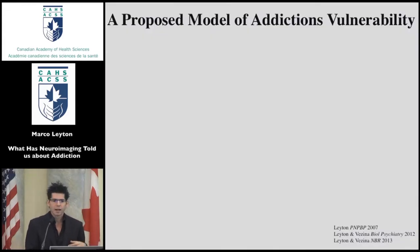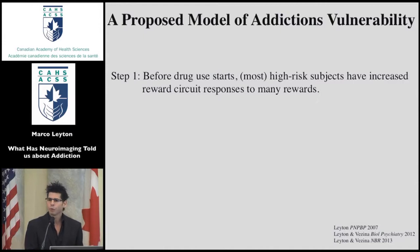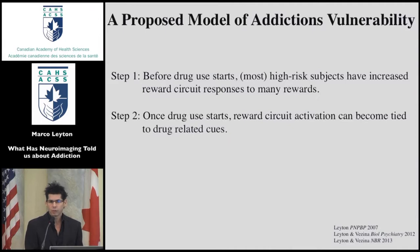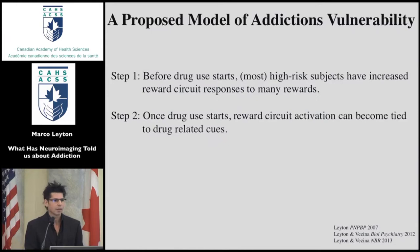Based on these observations, I've proposed a model of addictions vulnerability. Before drug use begins, many high-risk individuals have increased reward circuit responses to a wide range of rewards, predisposing them to risk-taking and impulsive behaviors. Once drug use begins, this reward circuit activation can become tied to drug-related cues — the system is potently turned on when cues are present, as is usually the case when taking a drug, but potently inhibited in their absence. This may well account for the progressive narrowing of interests: why drugs become so motivating while other things become less so.